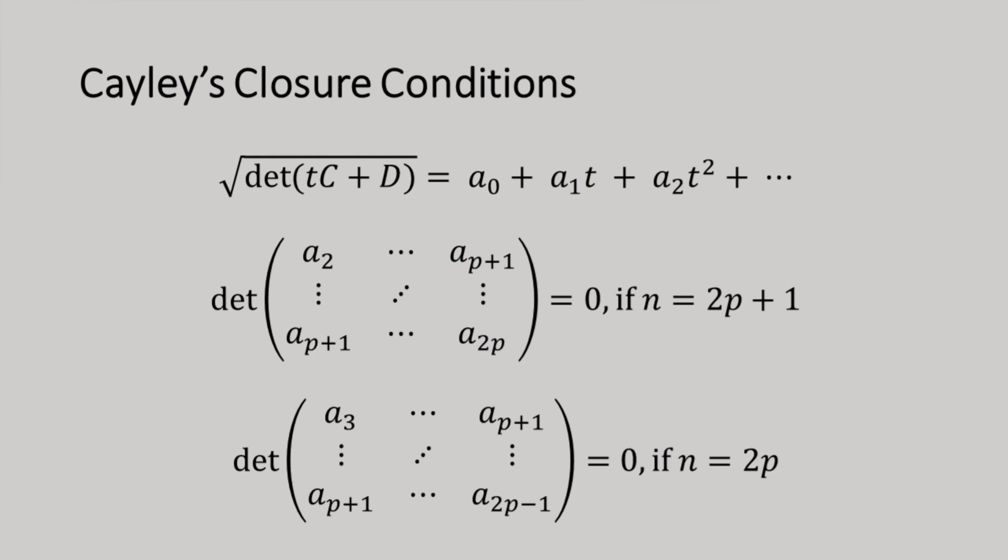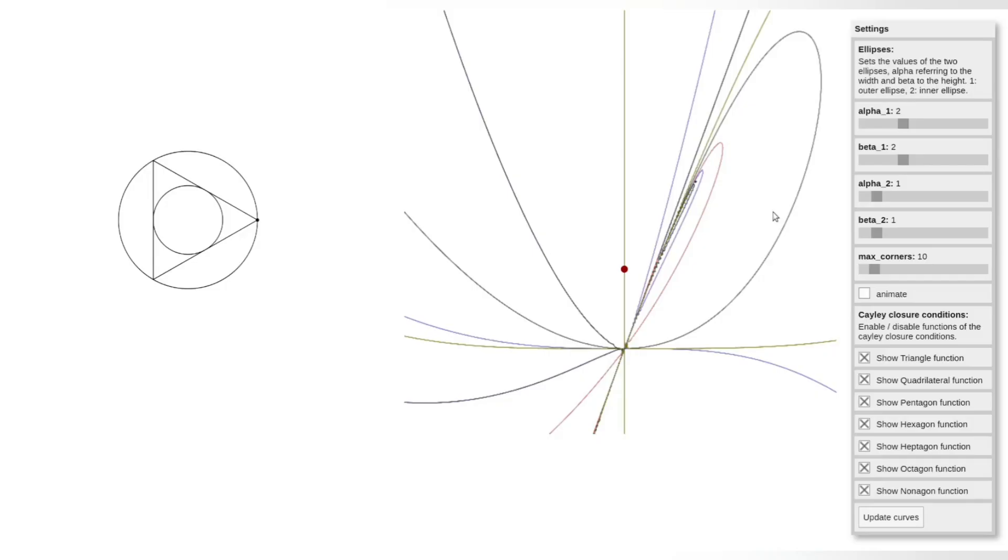Then, a Poncelet polygon with a vertex count dividing n exists if and only if the determinant of an associated n minus 1 over 2 dimensional Hankel matrix vanishes. That is to say that Poncelet's polygon exists if and only if the following criteria are met.